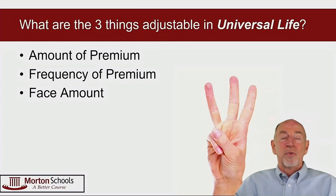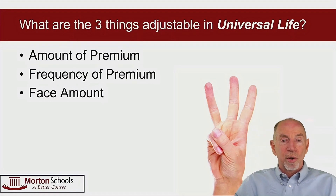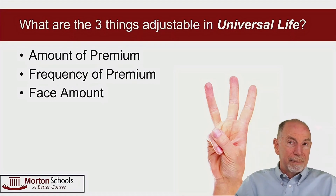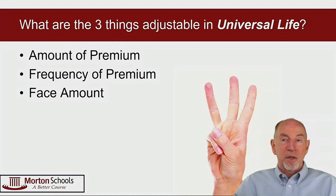The frequency of premium is also adjustable — you can change it from monthly to quarterly, semi-annually, or annually. And then finally there's the face amount, which is the big deal with the universal life policy.